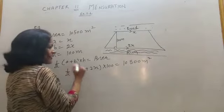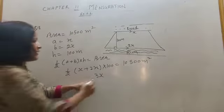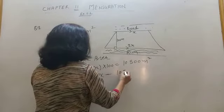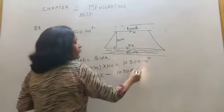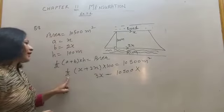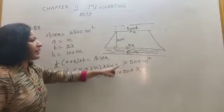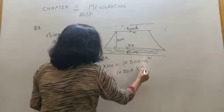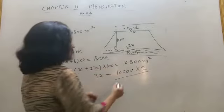X plus 2x equals 3x. And students, this 2 will go. When transferred to that side, it will multiply the numerator. And this 100 will divide this numerator.